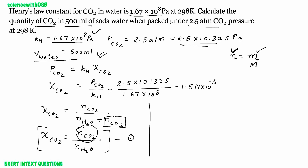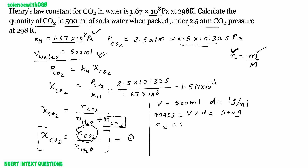Now, the volume of water is 500 ml. Since the density of water is 1 g/ml, mass of water = volume × density = 500 g. Number of moles of water = mass / molar mass = 500 / 18. The molar mass of H2O is 2×1 + 16 = 18 g/mol. So number of moles of water = 500 / 18 ≈ 27.78 moles.